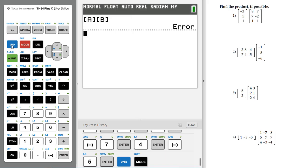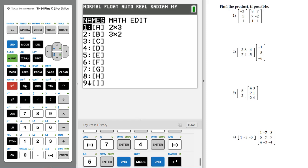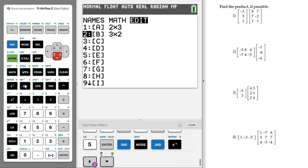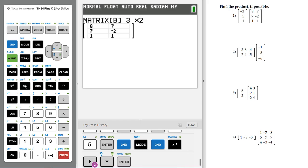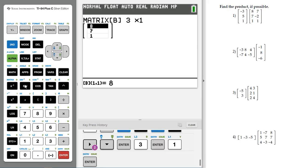And then we want to do our 2nd Matrix. So 2nd Matrix, we're going to go to edit, and we're going to do B. And so this one was going to be 3 rows by 1 column. And we're going to put the information in. That's negative 1, 8, and negative 6. And so now we've entered that.